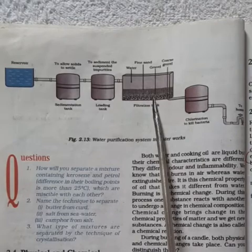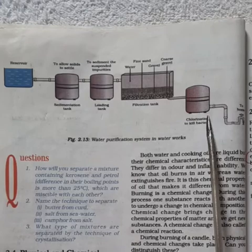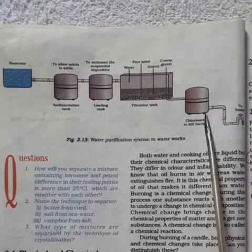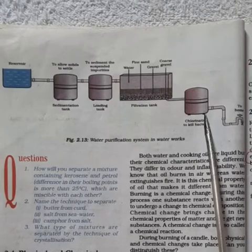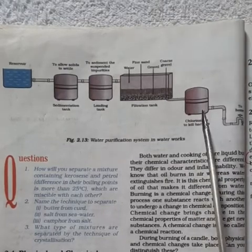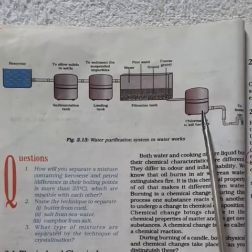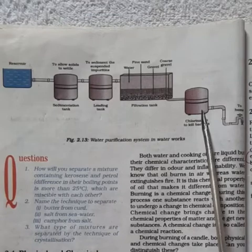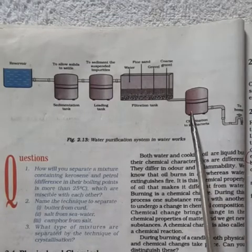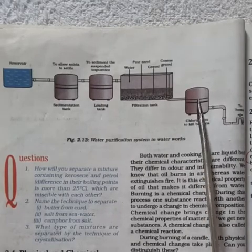Then water is passed on to the next tank known as chlorination tank. The clear water is chlorinated with a calculated amount of chlorine in this tank. Chlorine kills harmful bacteria and germs and provides safe drinking water.